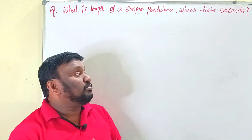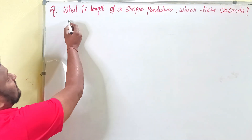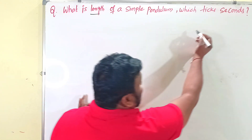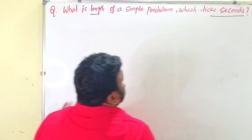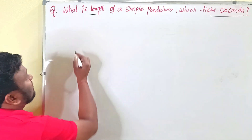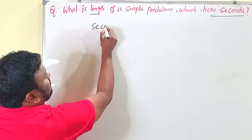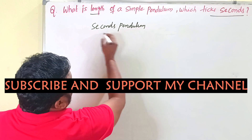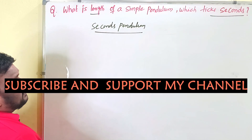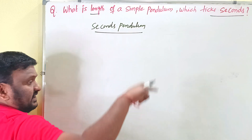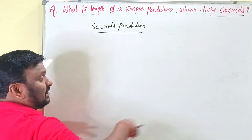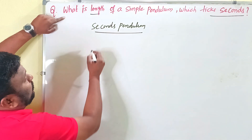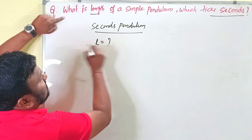Here is one important problem: what is the length of a simple pendulum which takes seconds — meaning, what is the length of a seconds pendulum? A seconds pendulum is a pendulum that takes 2 seconds to complete one time period. So we want to find out the length of the seconds pendulum.